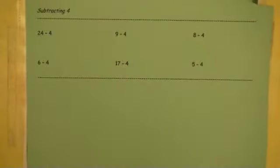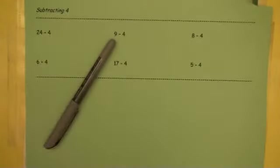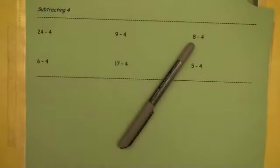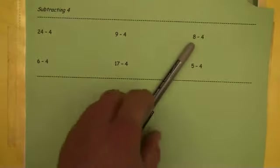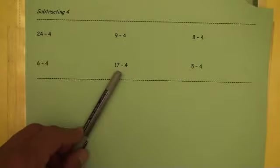Subtracting 4. You're going to go back 2. You're going to go back 2 even numbers. So instead of going to 22, you're going to go to 20. 9 minus 4. Instead of landing on 7, bam, you land on 5. 8 minus 4 takes you down to 4. You just skip an even number. Take you down to 2. Takes you down to 13 because you skipped 15. Skip 3, go down to 1. You're all set.